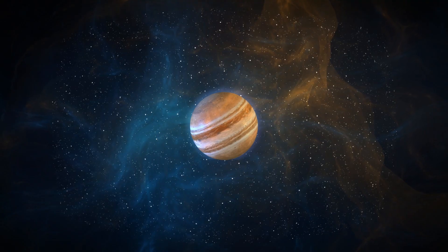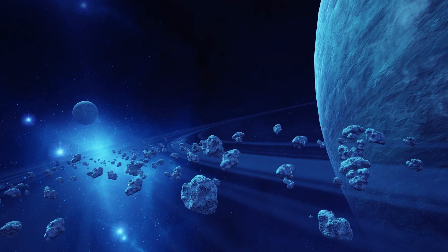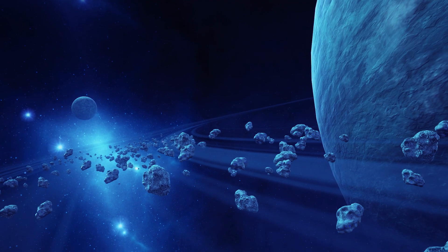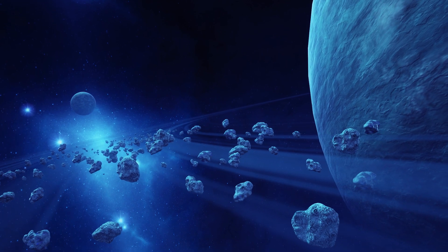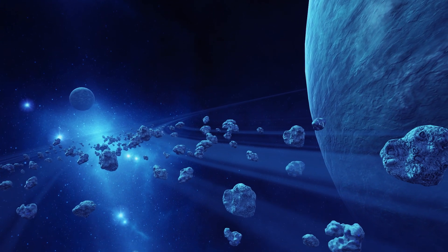The asteroid belt between Mars and Jupiter contains millions of rocky bodies. These remnants from the early solar system offer clues about its formation and evolution.